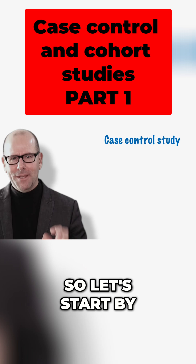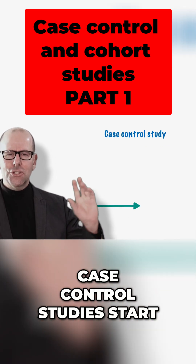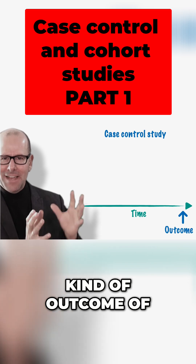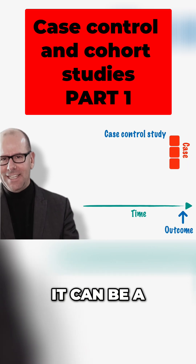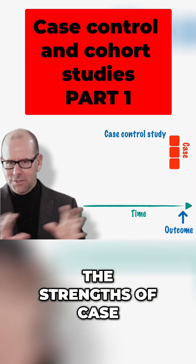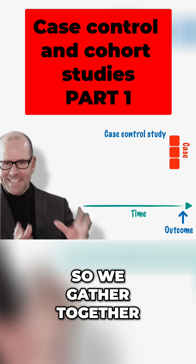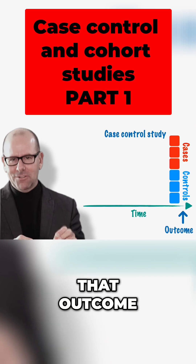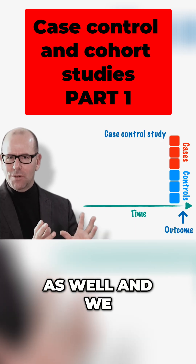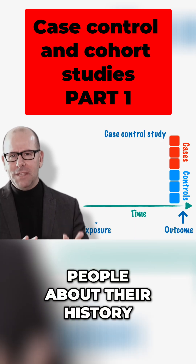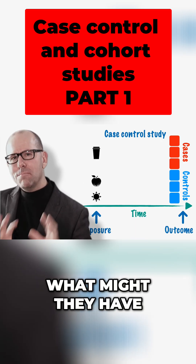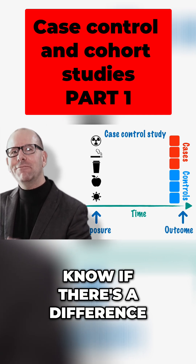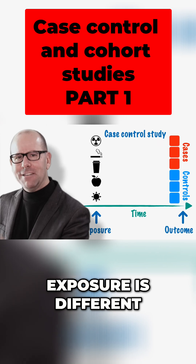Case control studies start off by collecting cases — people that have some kind of outcome of interest. Interestingly, it can be a rare outcome, which is one of the strengths of case control studies. We also want a group of controls, people that don't have that outcome. We ask both groups about their history — what might they have been exposed to in the past — and we want to know if their history of exposure is different.